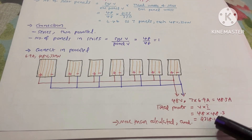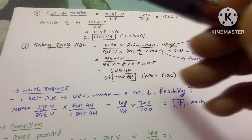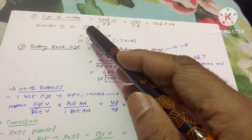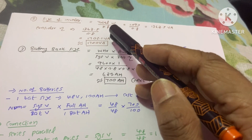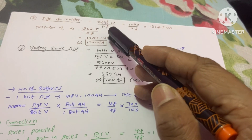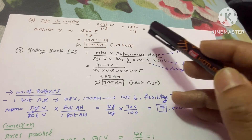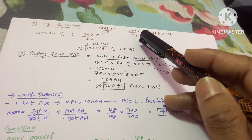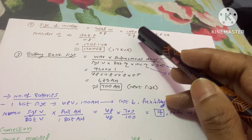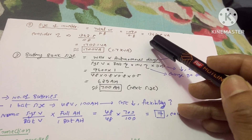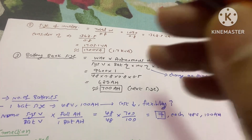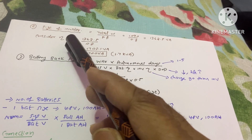The second calculation is inverter size. The equation is total watts divided by power factor. We use this to convert watts into VA. We have 1090W divided by 0.8 power factor, which gives 1362.5 VA.